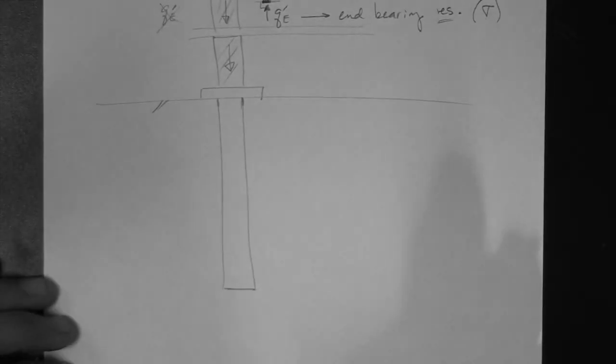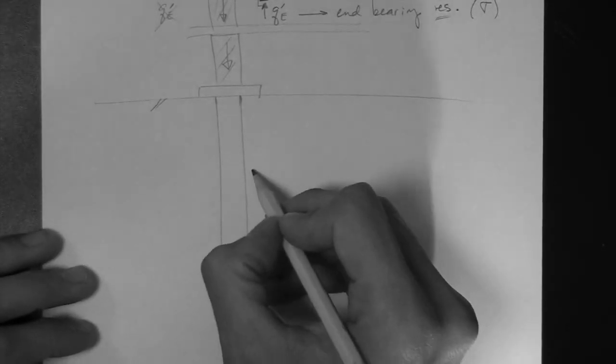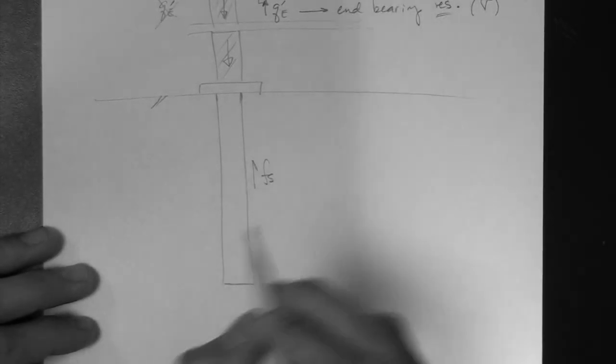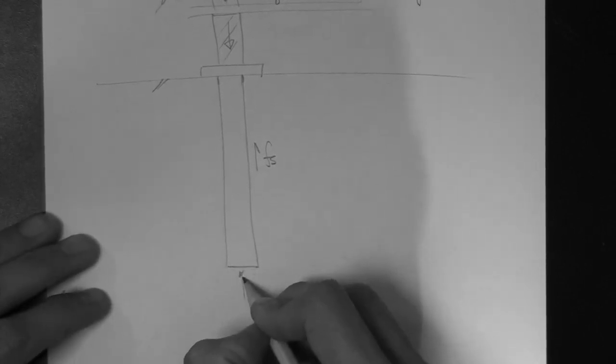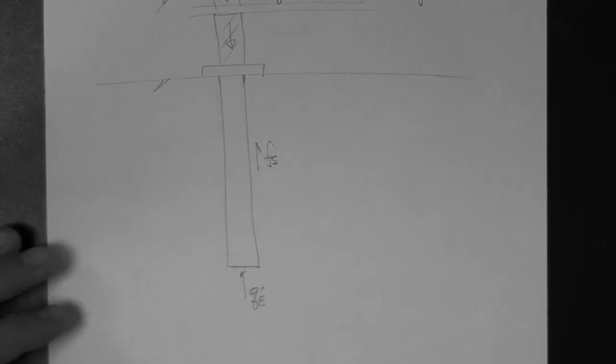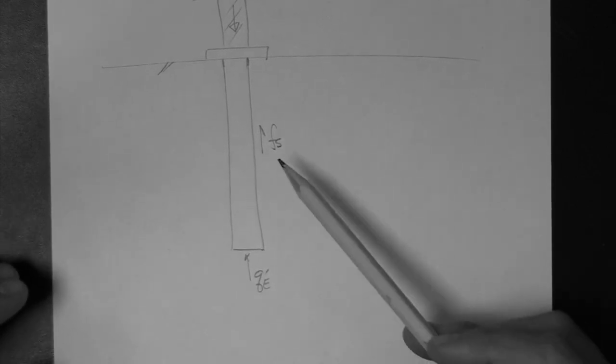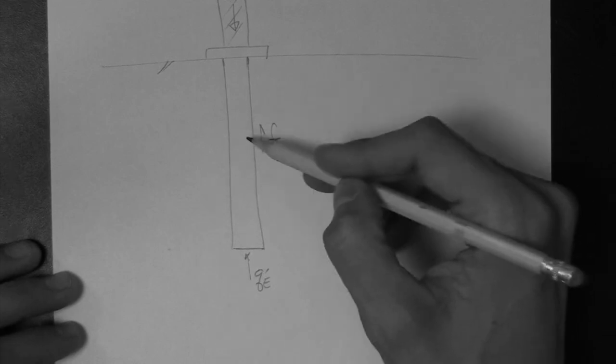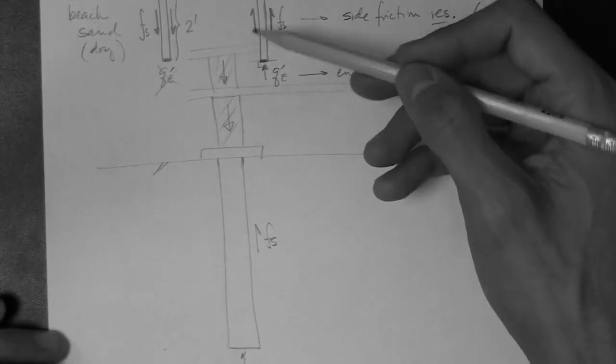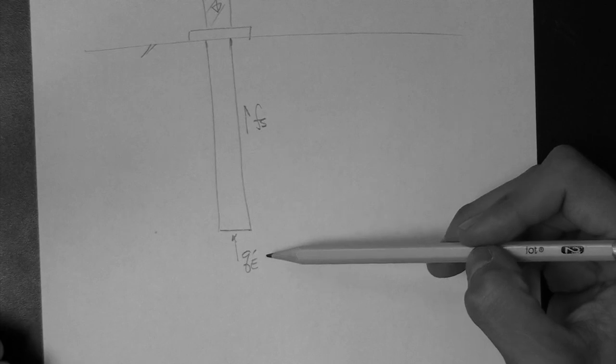You'll end up learning later that the Fs that develops and the Qe that develops, they develop at different rates. The Fs actually develops earlier in the construction process, and the Qe develops later. Let's just leave it like that.